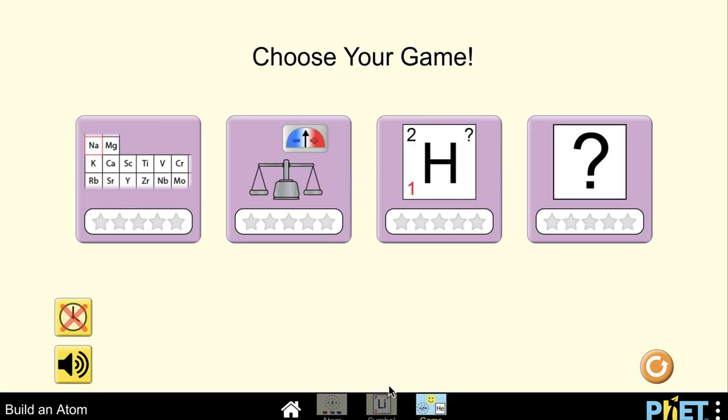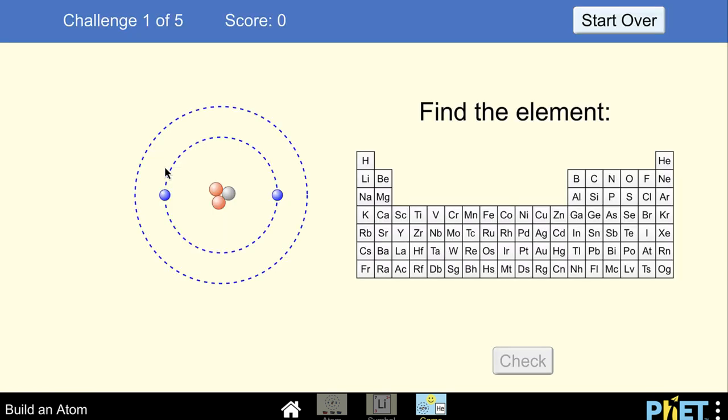Now the last thing you'll look at is the game. So what game do you want to play? Well, there's several different ones here for you to do. We'll go ahead and turn one on here. And now your idea is to find the element. So what do we see here, we see two protons, that tells us it is the second element in the periodic table.